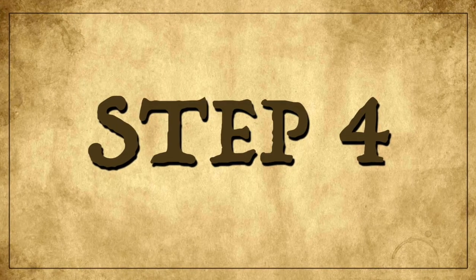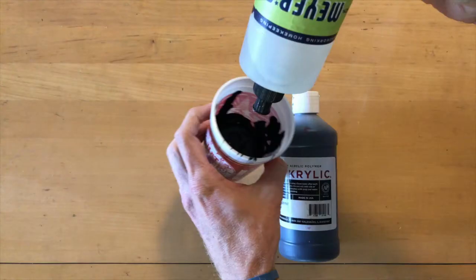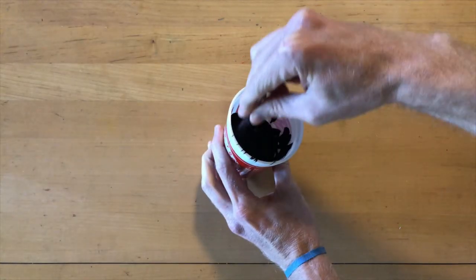Step 4: This is the fun part. You're going to mix one part soap with one part paint. So basically half soap, half paint.